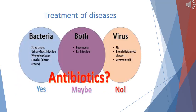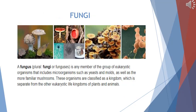Bacterial diseases can be treated with antibiotics — for example, urinary tract infection, sore throat, and whooping cough. However, viral diseases such as flu, bronchitis, and the common cold can never be treated with antibiotics. Pneumonia caused by bacteria is treated with antibiotics, as are bacterial ear infections, but if pneumonia or ear infections are caused by a virus, they obviously cannot be treated with antibiotics.